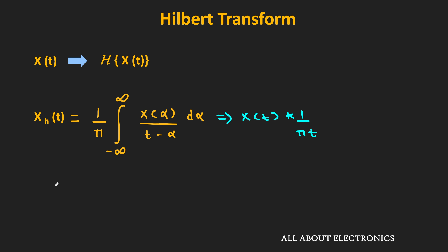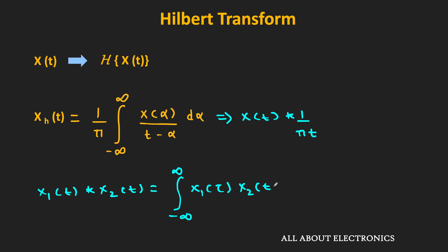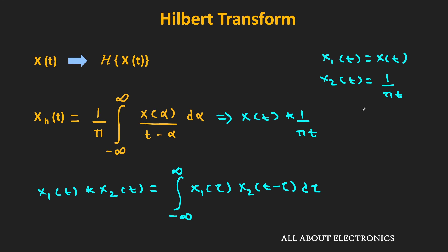Because the convolution of signals x1(t) and x2(t) is given as the integral from −∞ to +∞ of x1(τ) times x2(t − τ) dτ. In this case, x1(t) = x(t) and x2(t) = 1/(πt), with τ replaced by α. So mathematically, this is how we find the Hilbert transform of any signal.